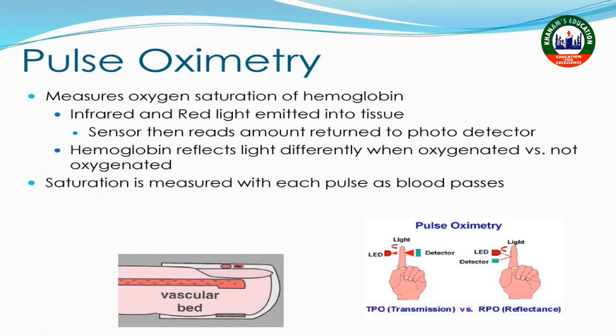The pulse oximeter shows us the saturation information — it shows us the normal oxygen saturation, indicating the oxygen level in the patient. The normal oxygen saturation level is 95 to 98 percent.